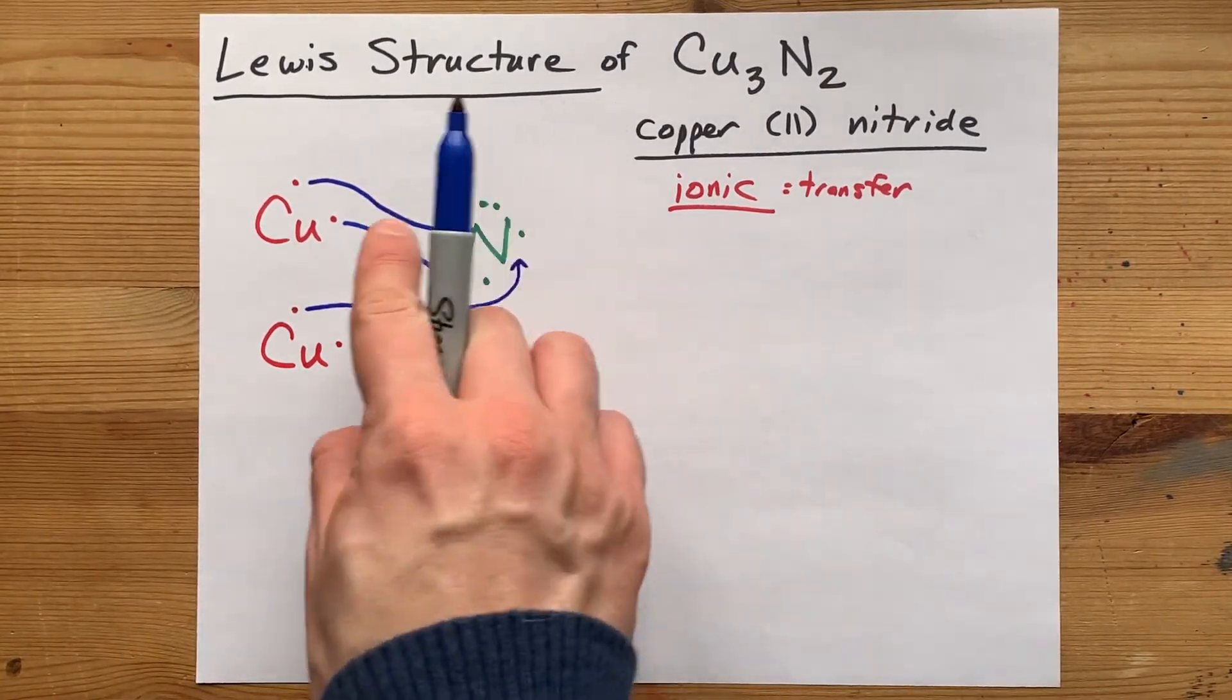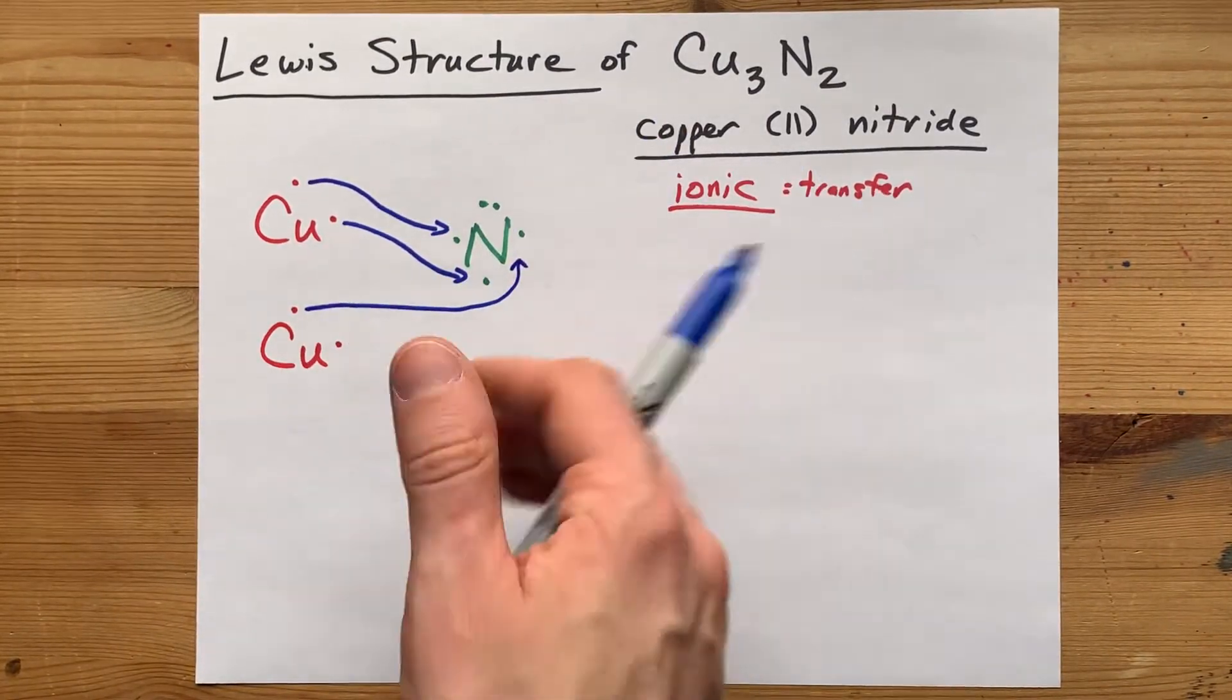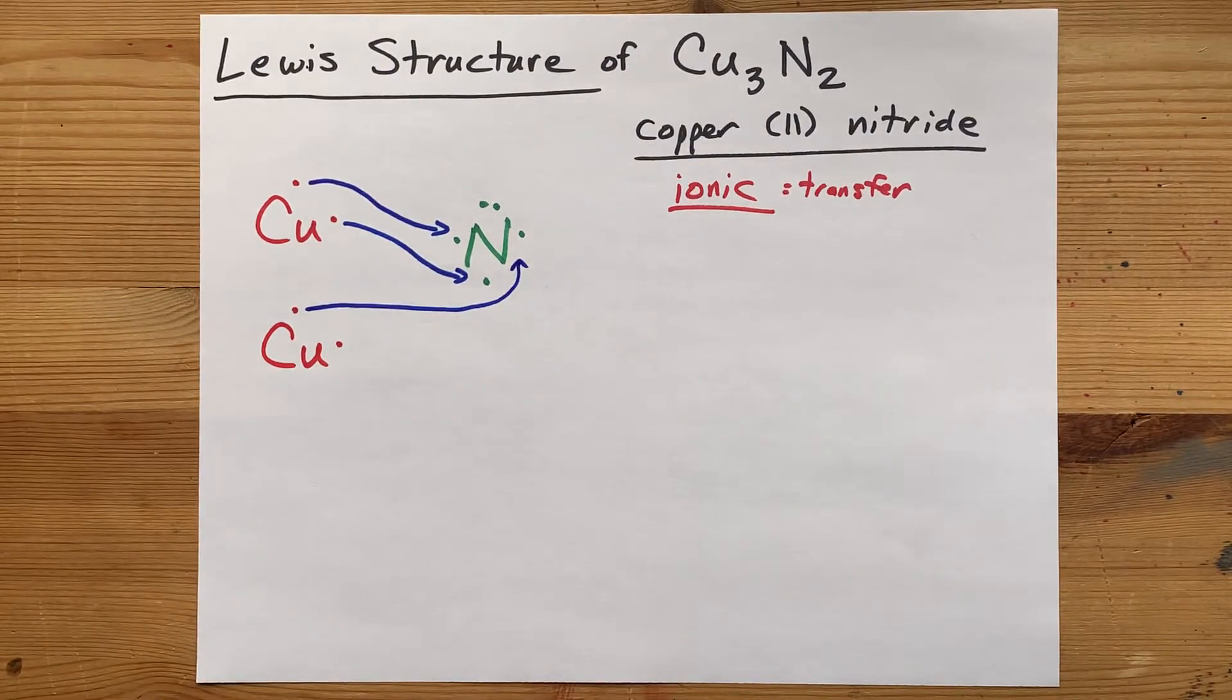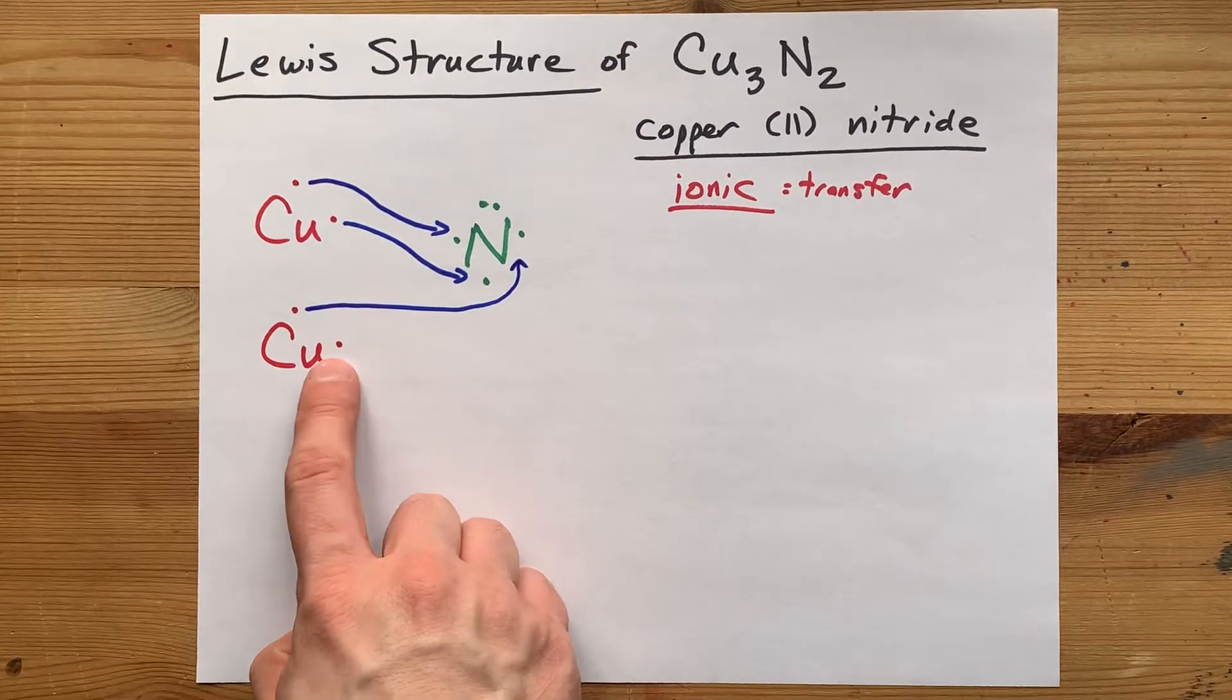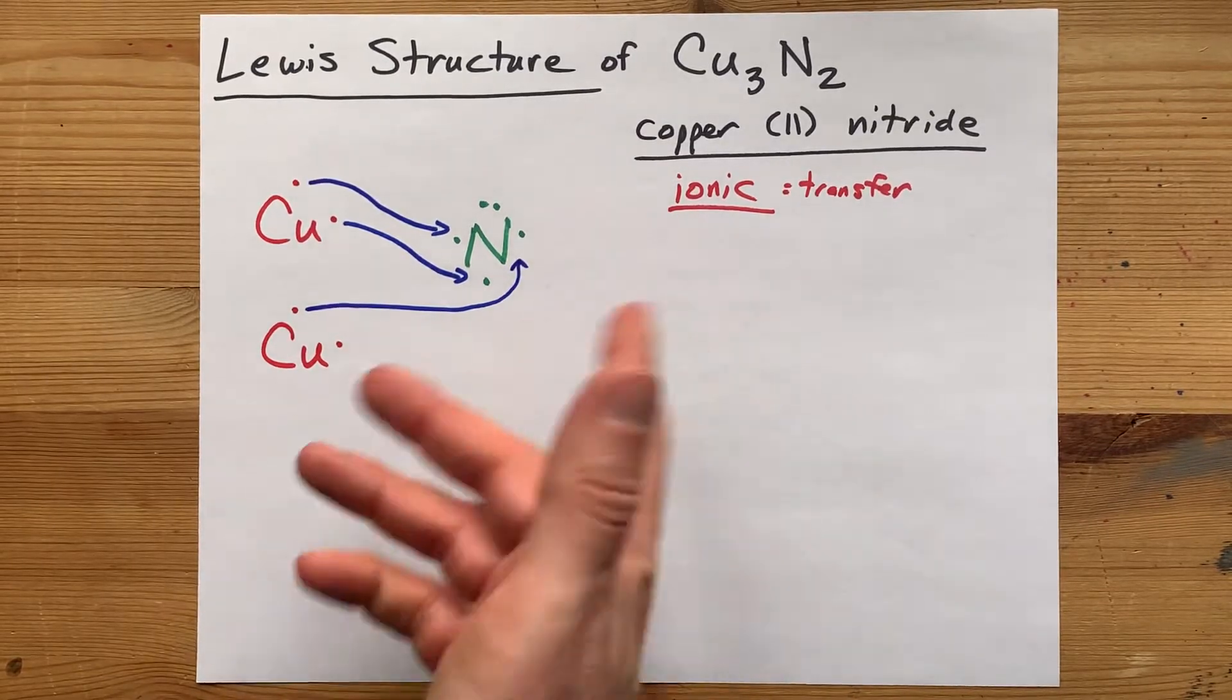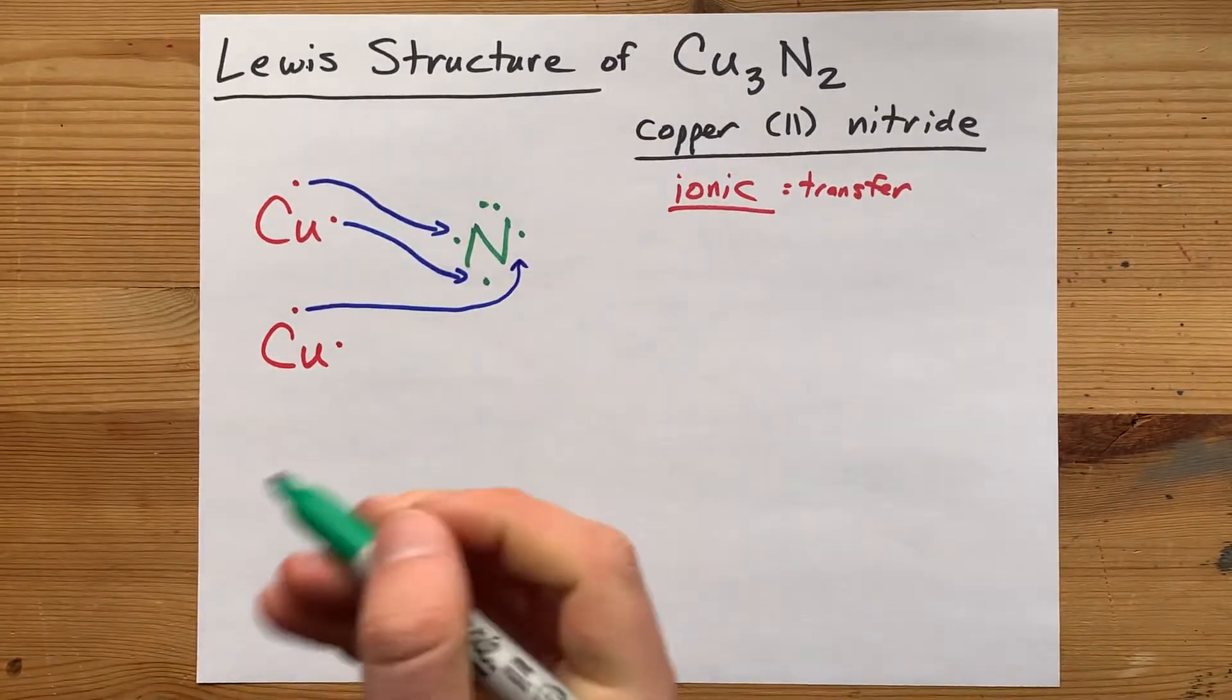It has five plus three, eight electrons total. You know who's not happy? This copper, who still has one electron to give away. You know what? You're going to need another nitrogen.